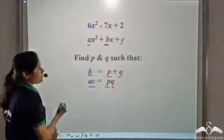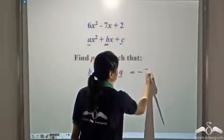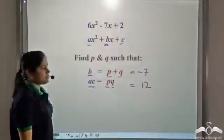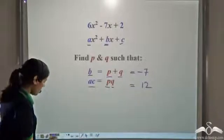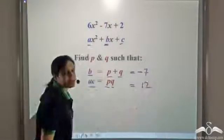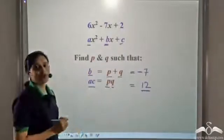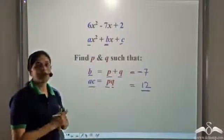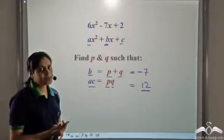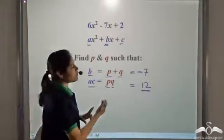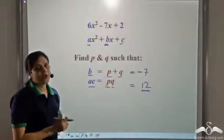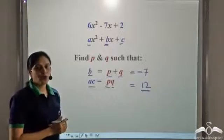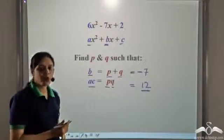So now: p + q = −7 and p × q = 6 × 2 = 12. Since the sum of the two numbers is negative and their product is positive, both numbers must be negative — a positive product from two negatives, and a negative sum confirms this. So we want two negative numbers whose product is 12.